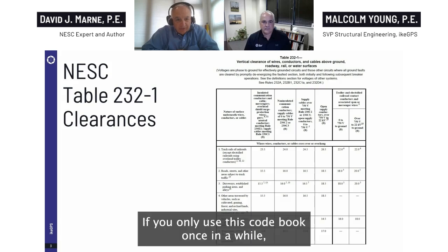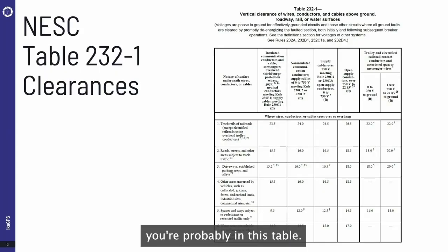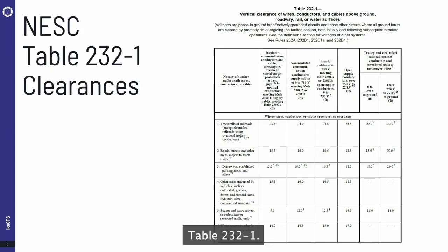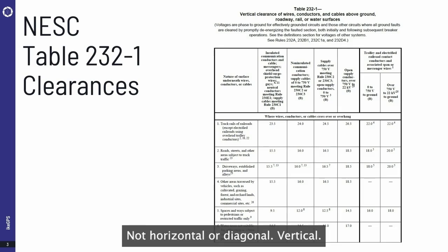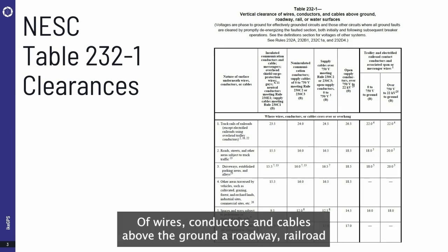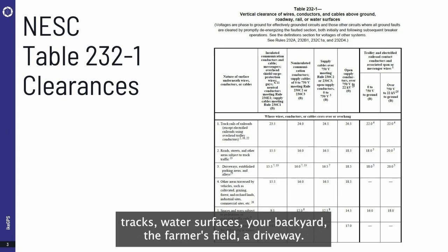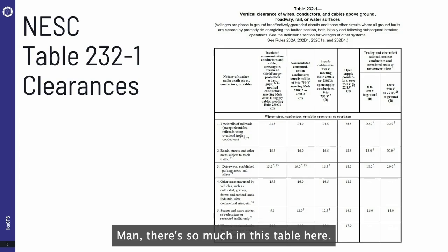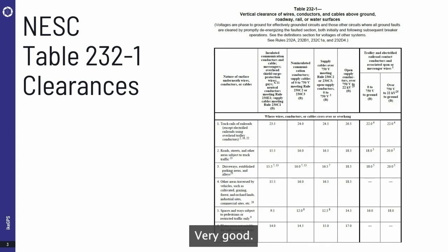If you only use this code book once in a while, you're probably in this table — Table 232-1. The title is 'Vertical Clearances' — not horizontal or diagonal — vertical clearances of wires, conductors, and cables above the ground, a roadway, railroad tracks, water surfaces, your backyard, a farmer's field, a driveway. There's so much in this table.